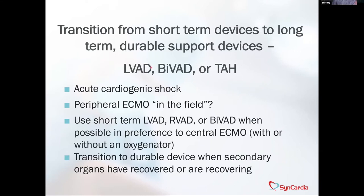What do we do when we transition from short-term devices to long-term devices? Acute cardiogenic shock patients that show up on peripheral ECMO in the field, use of CentraMag, cardiohelp BiVADs, CentraMags — is anybody in your institution using durable BiVADs like HeartWare or even HeartMate 3? At what time do you transition these patients from short-term to long-term? What is your end organ perfusion marker for moving towards surgery? Nutrition, liver, kidney — how are they able to participate in terms of their neurological function?